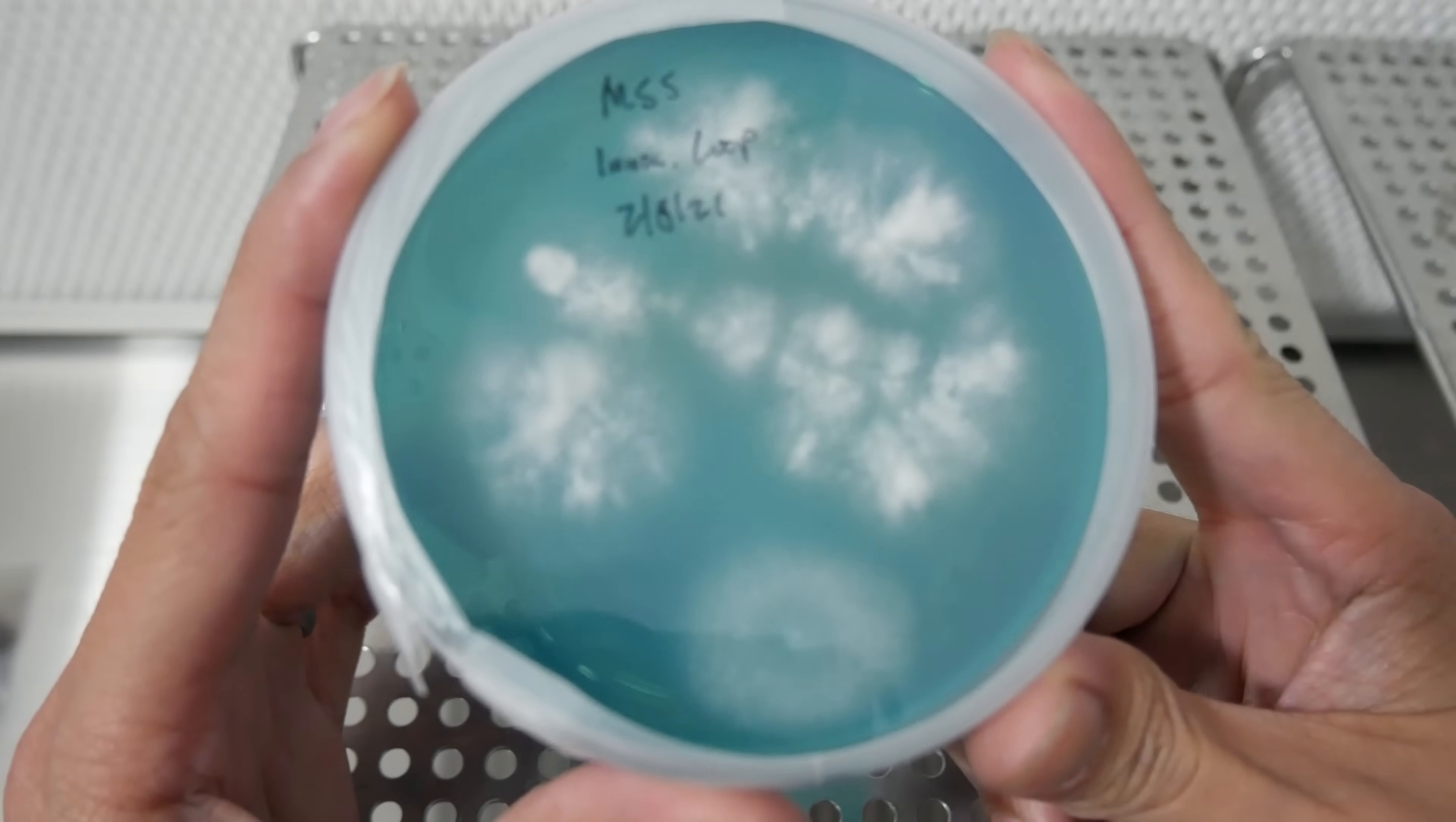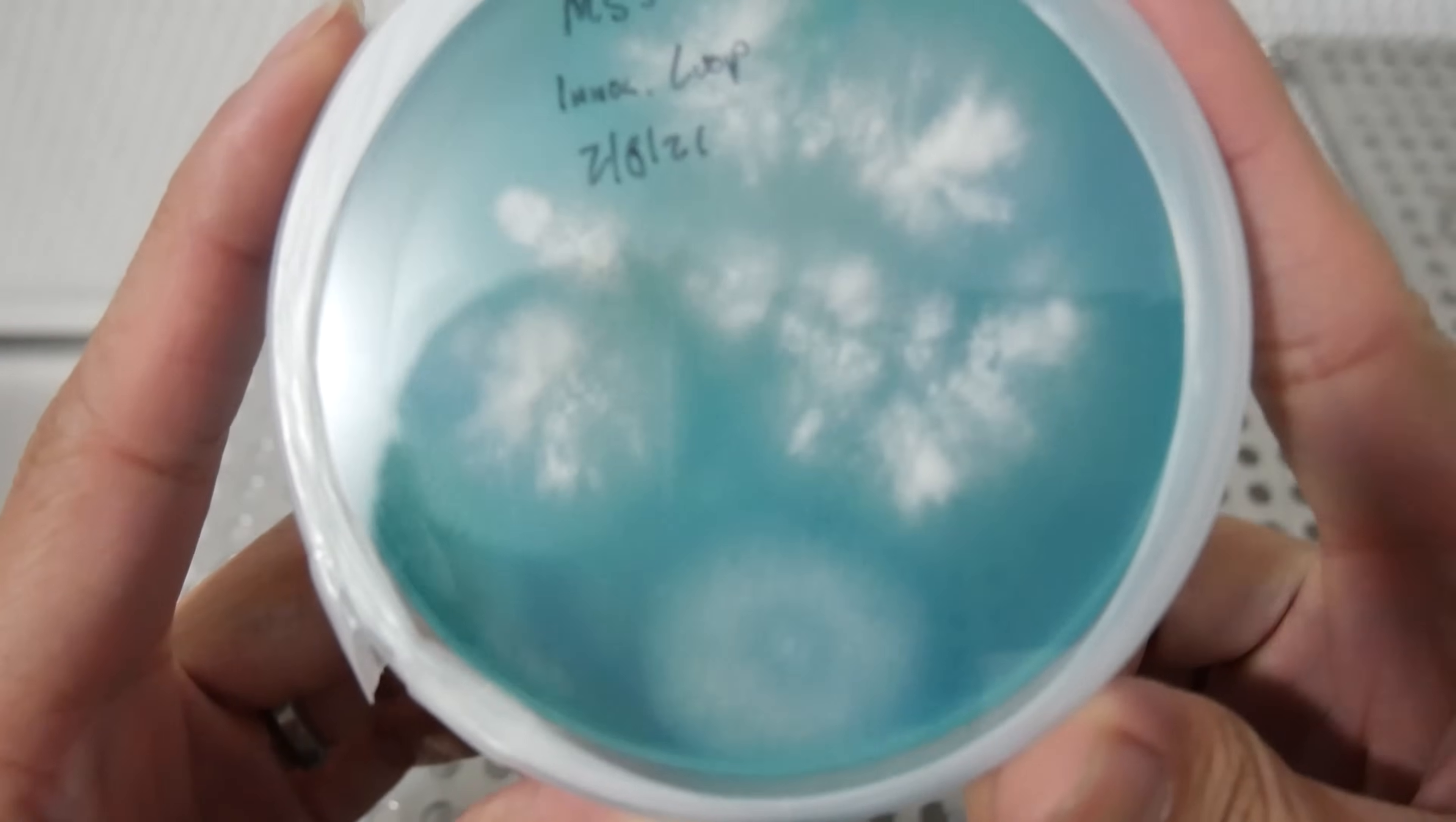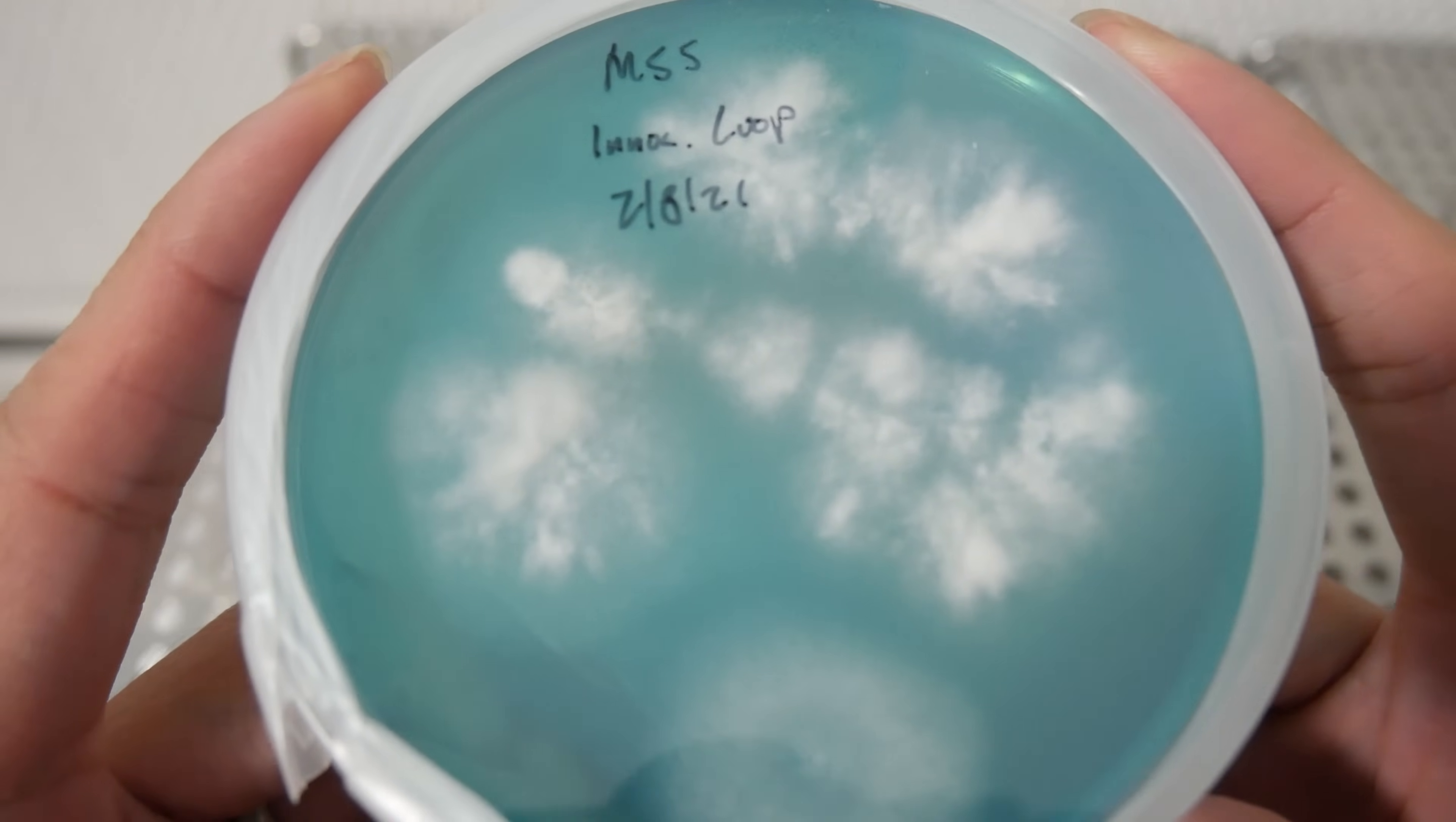Here's our inoculation loop plate. I'm gonna make transfers on this dish. There seems to be a little bit of some mold growing at the bottom there, so I'm gonna transfer my clean mycelium that's furthest away from that point.